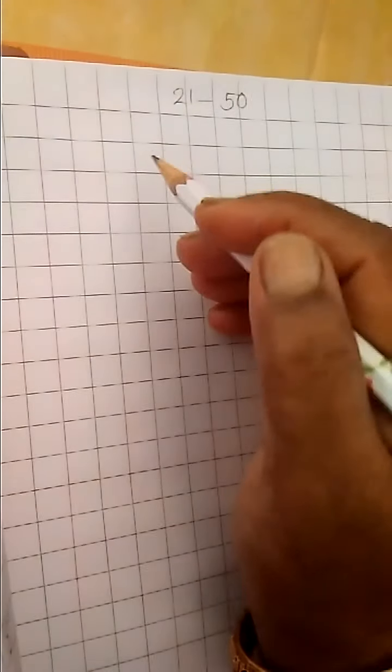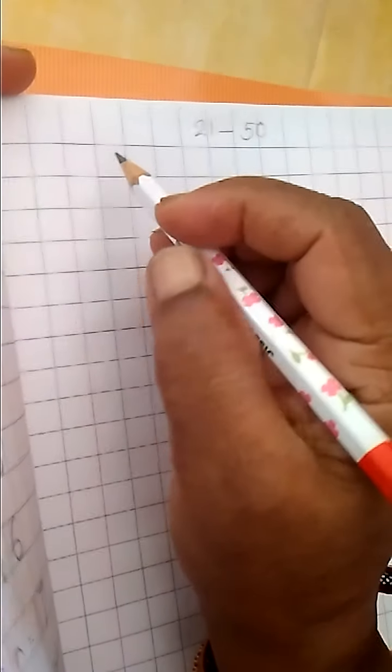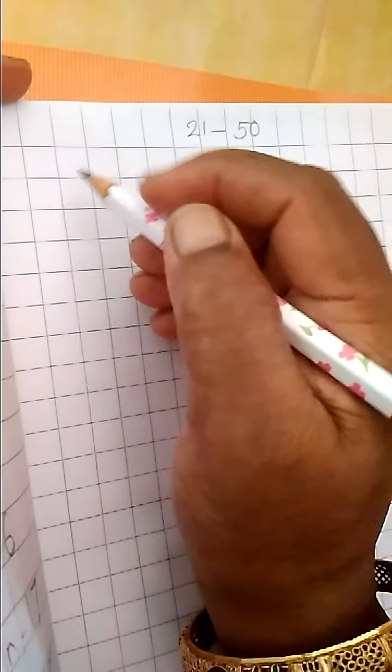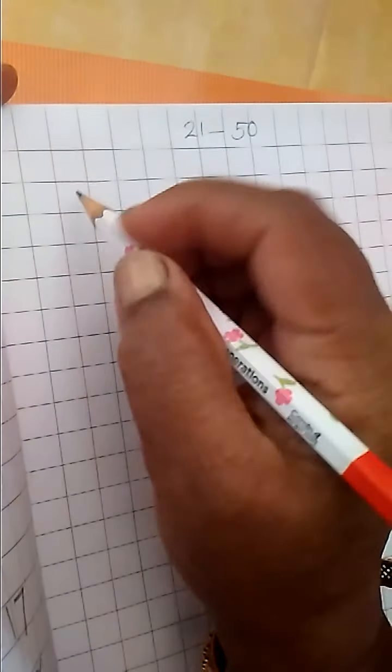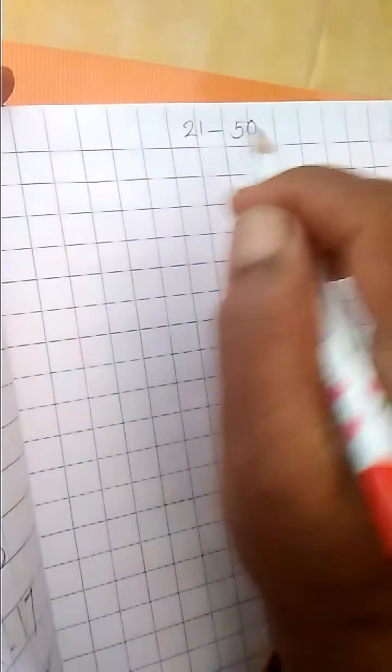Good morning children. In previous video, we learned 1 to 20 in verse together. Today we are going to learn 21 to 50 in verse together.